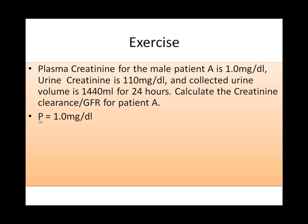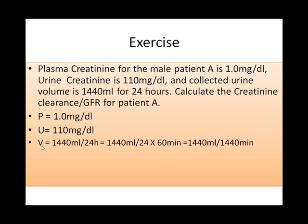Let's summarize our figures. The plasma creatinine concentration is 1 mg per deciliter. Urine creatinine concentration is 110 mg per deciliter. V, the volume, is 1440 ml but it is for 24 hours. My requirement is V should be per minute, so I multiply 24 by 60 minutes to get 1440 minutes for 24 hours. So my V is 1 ml per minute.